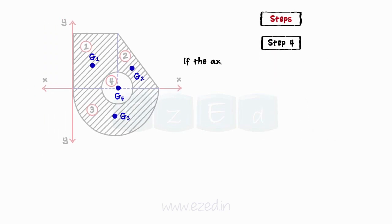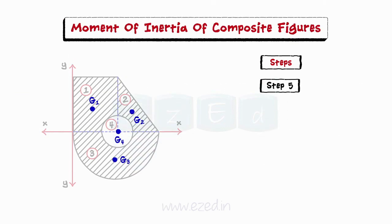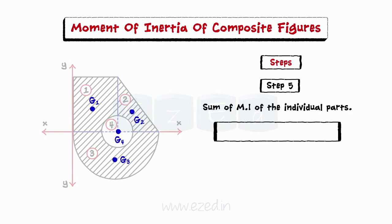Step 4: If the axis does not pass through the centroid, nor any ready expression is applicable, then we use the parallel axis theorem. Step 5: The moment of inertia of the entire composite figure is the sum of the moment of inertia of the individual parts. In the above example, ixx equals ix1 plus ix2 plus ix3 minus ix4.